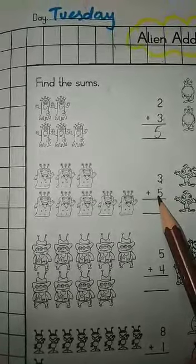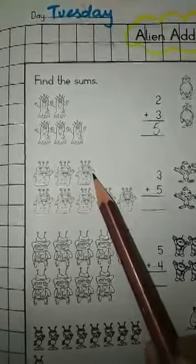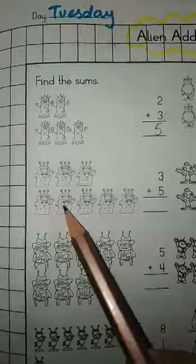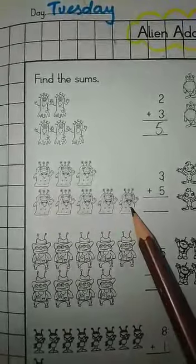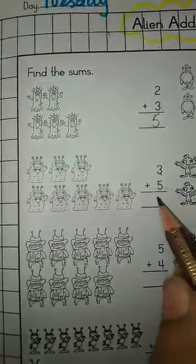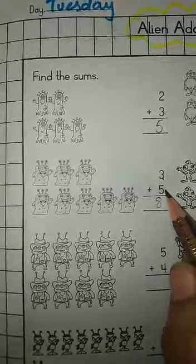Three plus five is equal to? Now count these all together. One, two, three, four, five, six, seven, eight. How many all together? Eight. Three plus five? Eight.